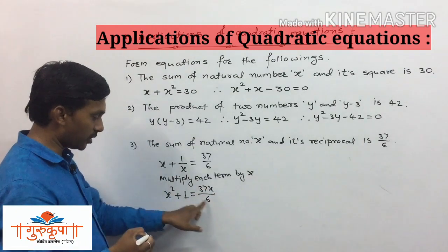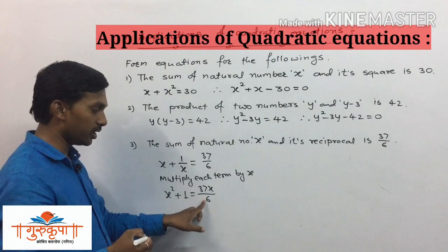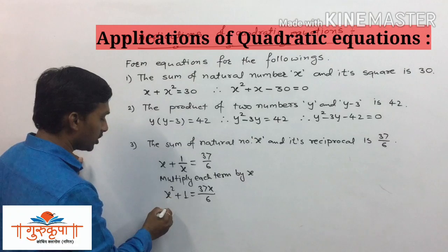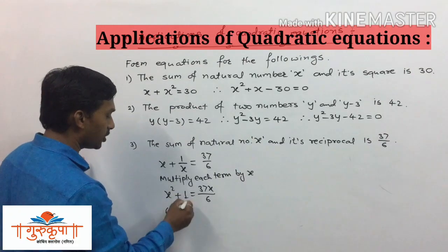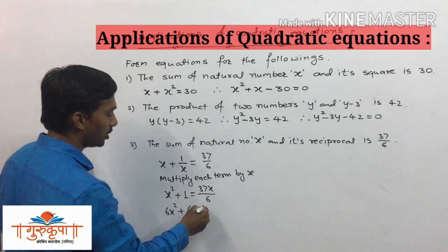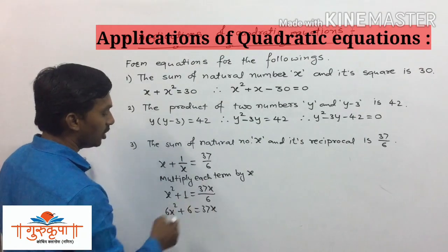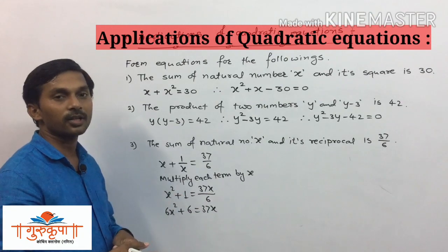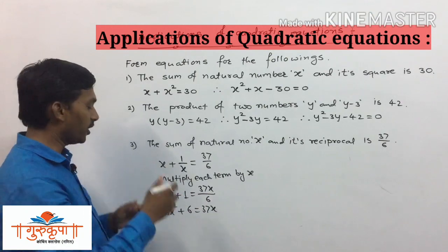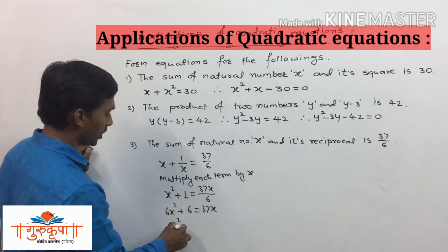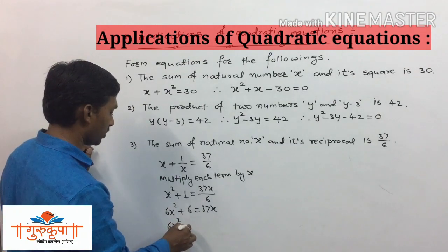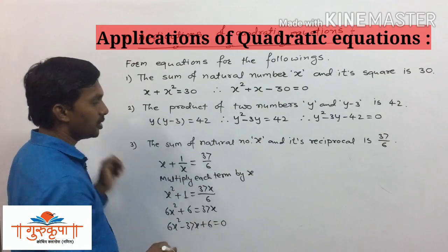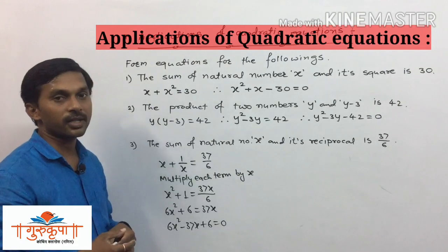Now we transfer the 6 from the right side denominator to the left side, so it becomes multiplication: 6x² + 6 = 37x. Transferring 37x to the left side gives us 6x² - 37x + 6 = 0, which is the required quadratic equation in standard form.